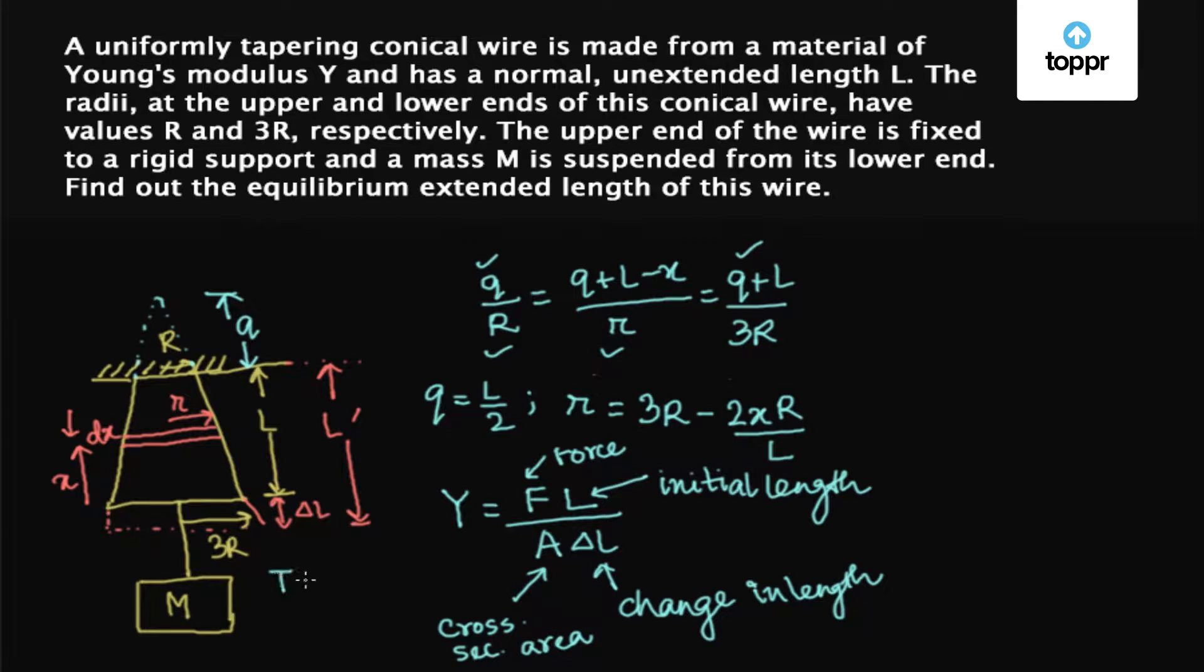So we can write here in this equation of the Young's modulus Y equals F which is MG. And for this element, that is the element of radius r and thickness DX, the initial length comes to be DX. Let's say it suffers an elongation of DY.